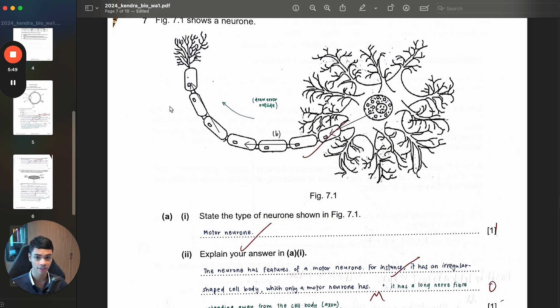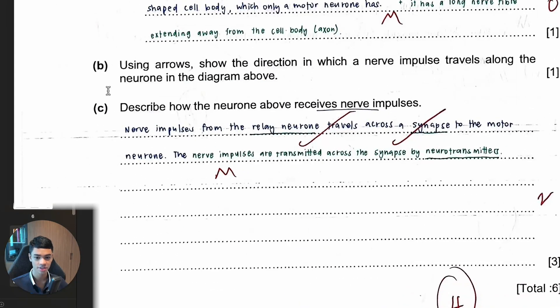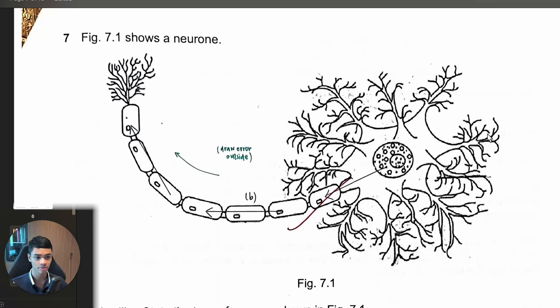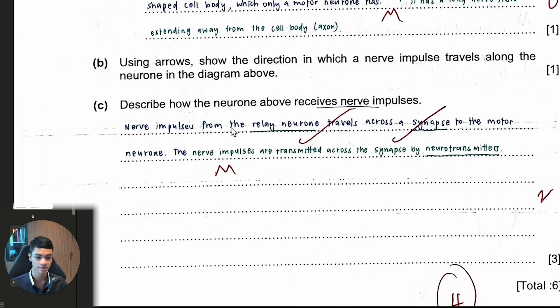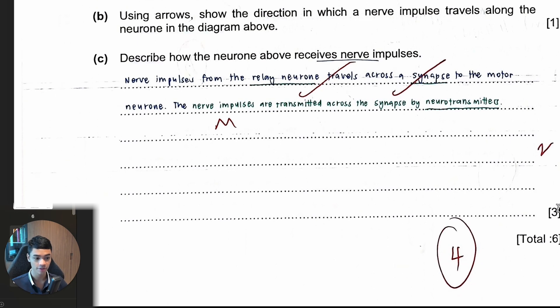Or maybe I'll say that it lacks connections, like it doesn't have many connections at the end of it. So that could give me evidence why it's not a relay. Next one, describe how the neuron receives nerve impulses. So all this is where it receives. There must be some other neuron previously that's connected to it, and then it receives, jumps across the synapse. Let's see what you said. Nerve impulses from relay travel across the synapse to motor neuron. This is very good, you were specific. The thing is, look at the mark allocation, so big. Confirm won't get three marks.